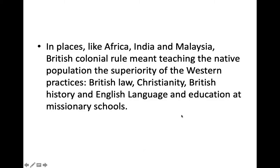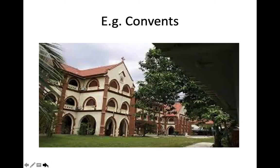British law, Christianity, British history, and English language and education at missionary schools — these are elements of British superiority, according to the British. And this is one of the examples of colonization in terms of education: the establishments of places like convents and also missionary schools.